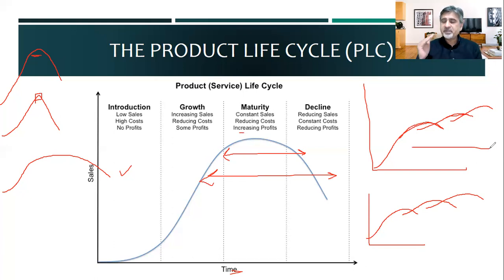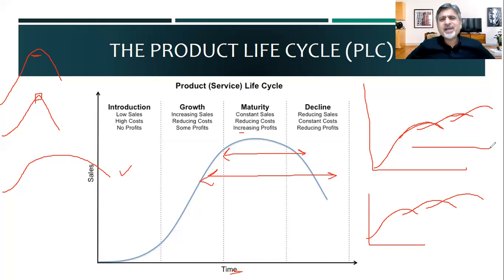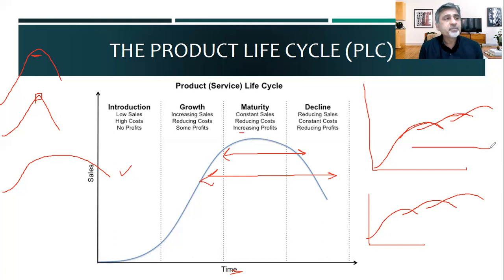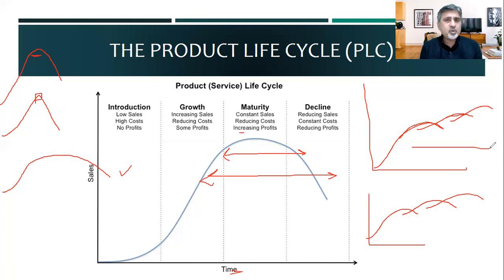Why can't they give all the features from the beginning? When they introduce an iPhone model, they could give 256 GB from the start — why don't they? Why give iPhone 6 first and then 6X? They already knew and had planned the features of 6X, but they don't disclose it. That is what they are doing strategically to extend the product lifecycle.